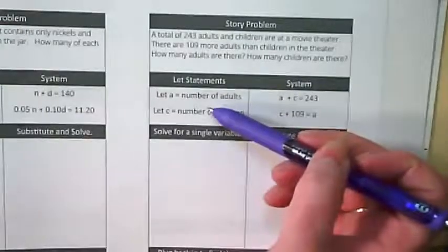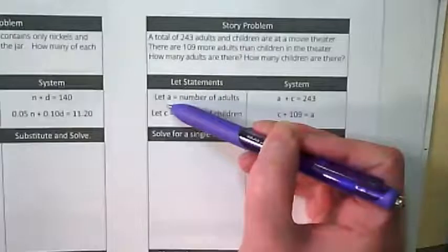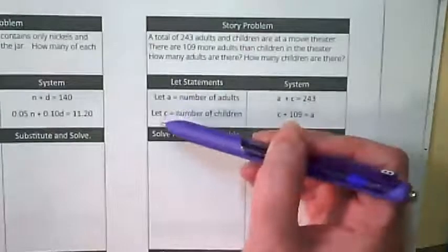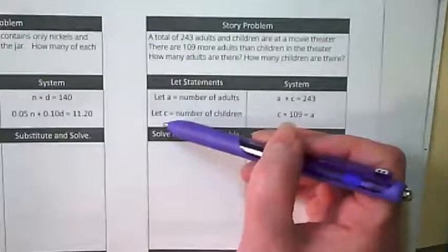Notice what's already been done for us. We're going to let the variable A equal the number of adults, and the variable C equal the number of children.